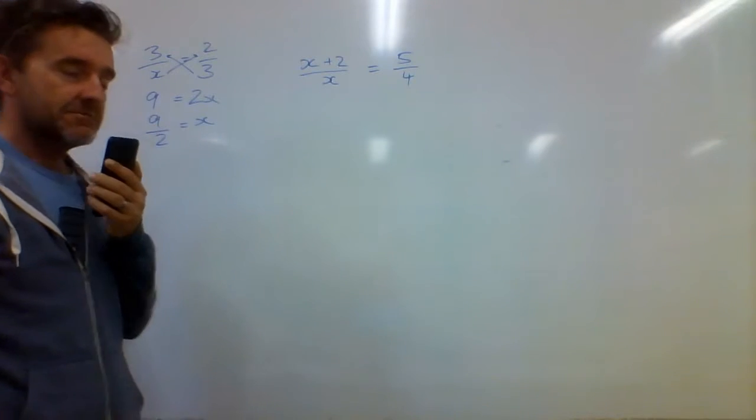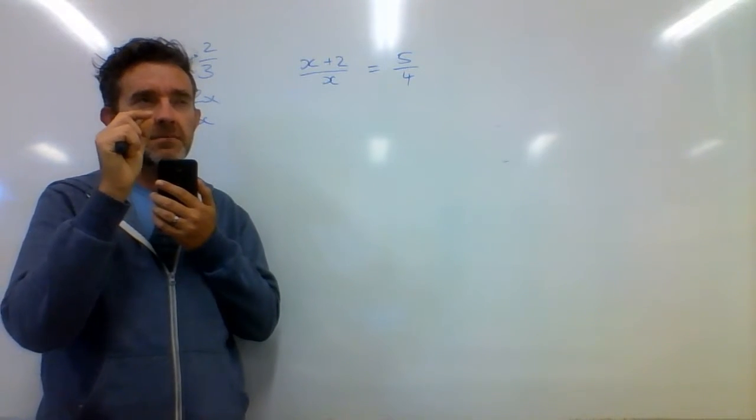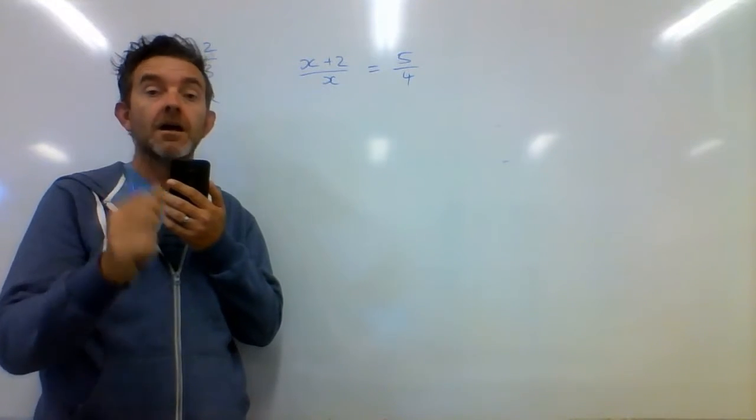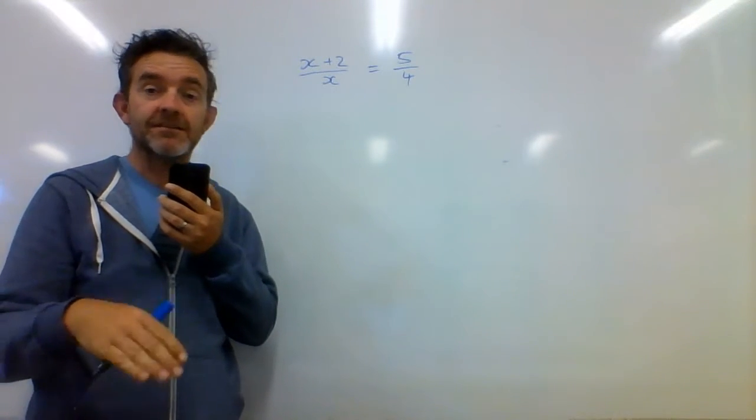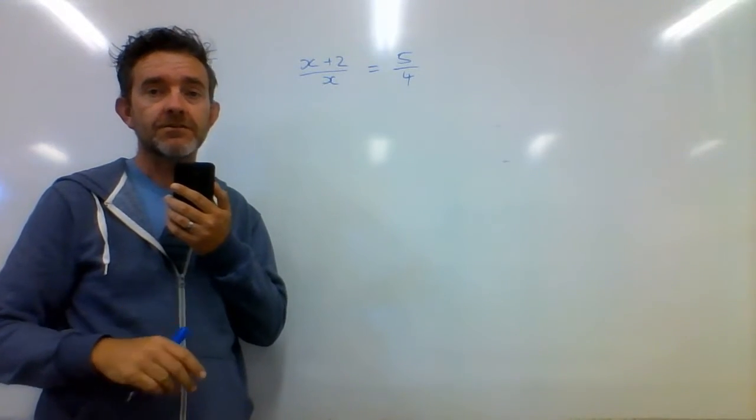This one here, the temptation for some people would be to say, X is being divided by X, that means they'll cancel out. But X is not being divided by X. X plus 2 is being divided by X. So you cannot do that.